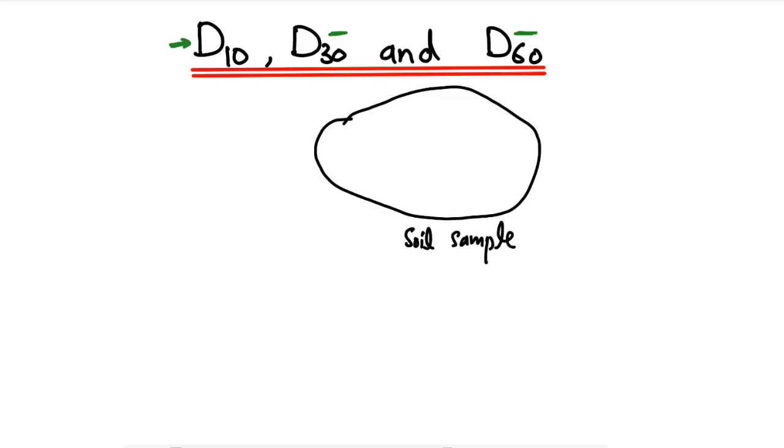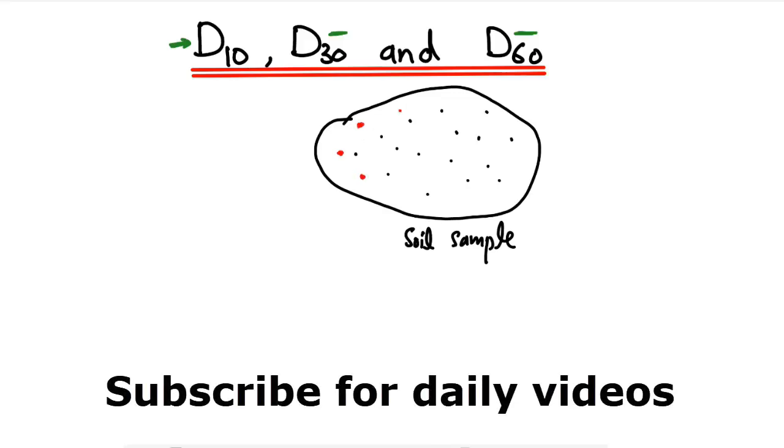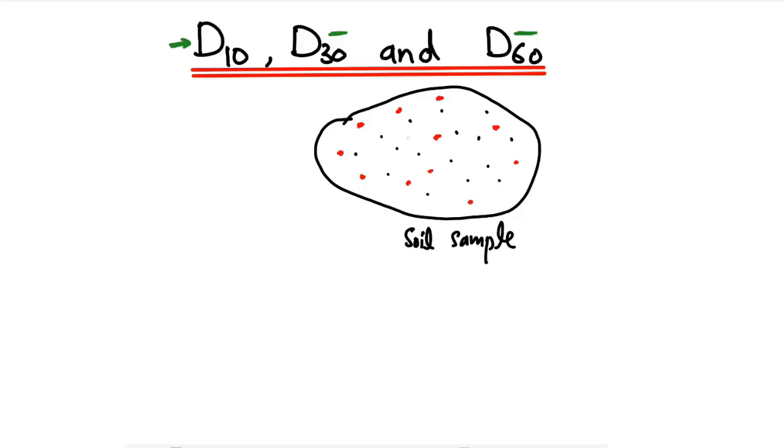Let's suppose there are different particle sizes in this soil sample. For example, these are very small diameter particles. Then we have larger diameter particles - for example, let's suppose two millimeters, before it was one millimeter. The red ones are bigger in diameter.